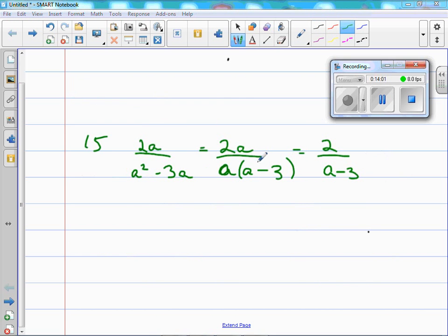Our last recording here. You notice I wrote the problem. I had to factor out the a in the denominator and have a minus 3. So since I have that factored out, I can cancel out these two a's and end up with 2 in the numerator over a minus 3 as our answer. Now, I'll do the rest of the questions, numbers 16, 17, and 18 in class.